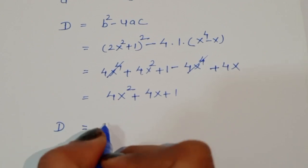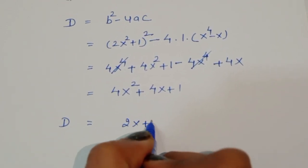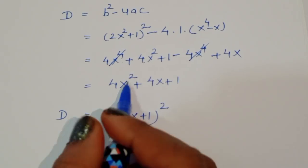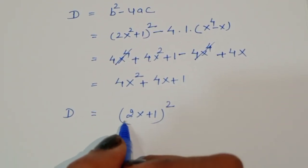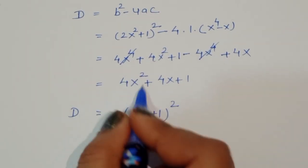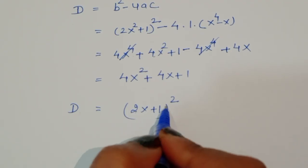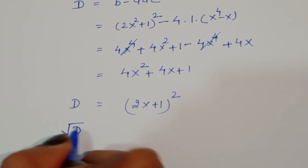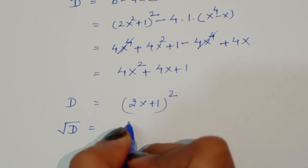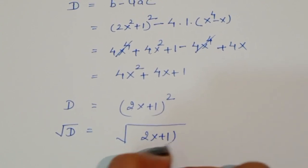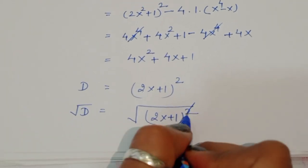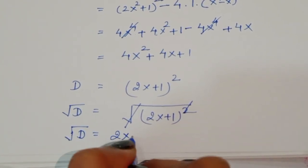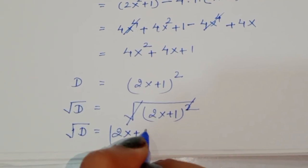We recognize that 4x squared plus 4x plus 1 is the perfect square form of 2x plus 1, whole square. So the square root of d equals 2x plus 1, or mod of 2x plus 1.